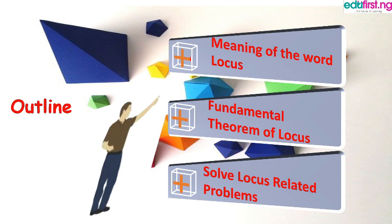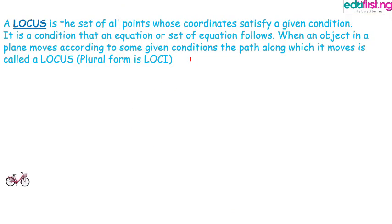We're also going to learn fundamental theories of locus as well as solve simple locus-related problems. So grab your pen and paper and let's learn. What is a locus? It is a set of all points whose coordinates satisfy a given condition. What this statement means is when an object moves according to some given condition, the path along which it moves is called a locus. The plural form of locus is called loci.